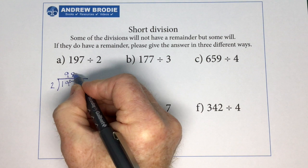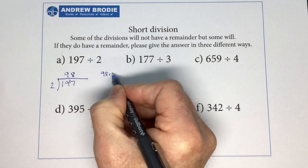That gives us 1 left. 2 into 17 goes 8 times. So now we know that we've got 98, remainder 1.